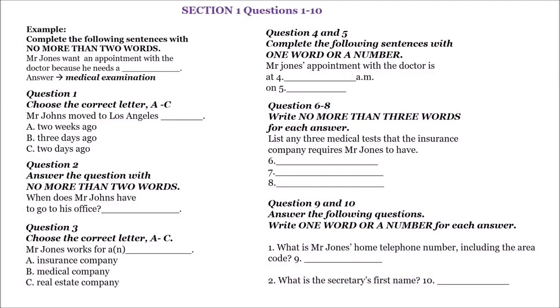You will hear a number of different recordings and you will have to answer the questions on what you hear. There will be time for you to read the instructions and questions and you will have a chance to check your work. All the recordings will be played once only. The test is in four sections. Write all your answers in the question booklet. At the end of the test you will be given ten minutes to transfer all your answers to an answer sheet. Now turn to section one.